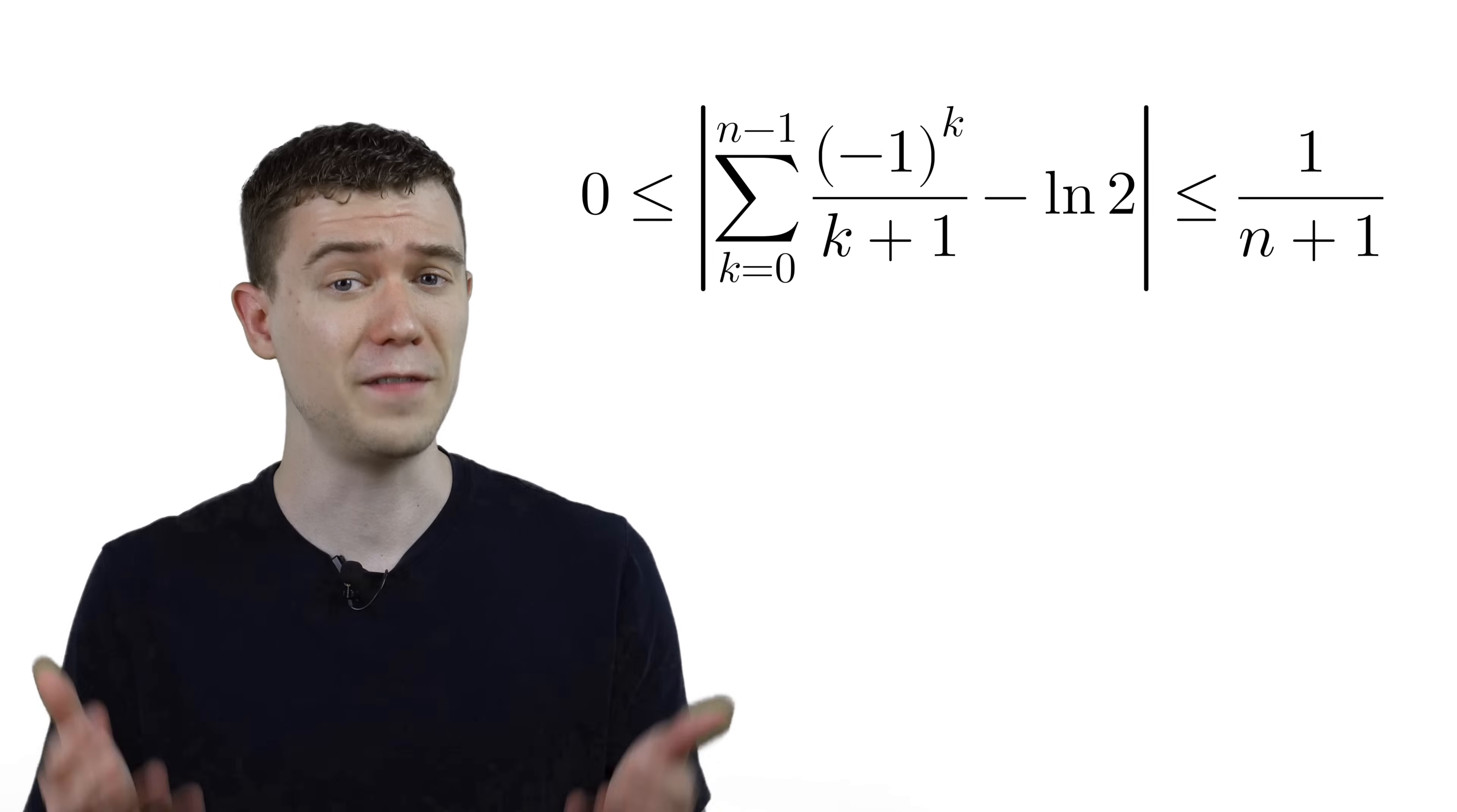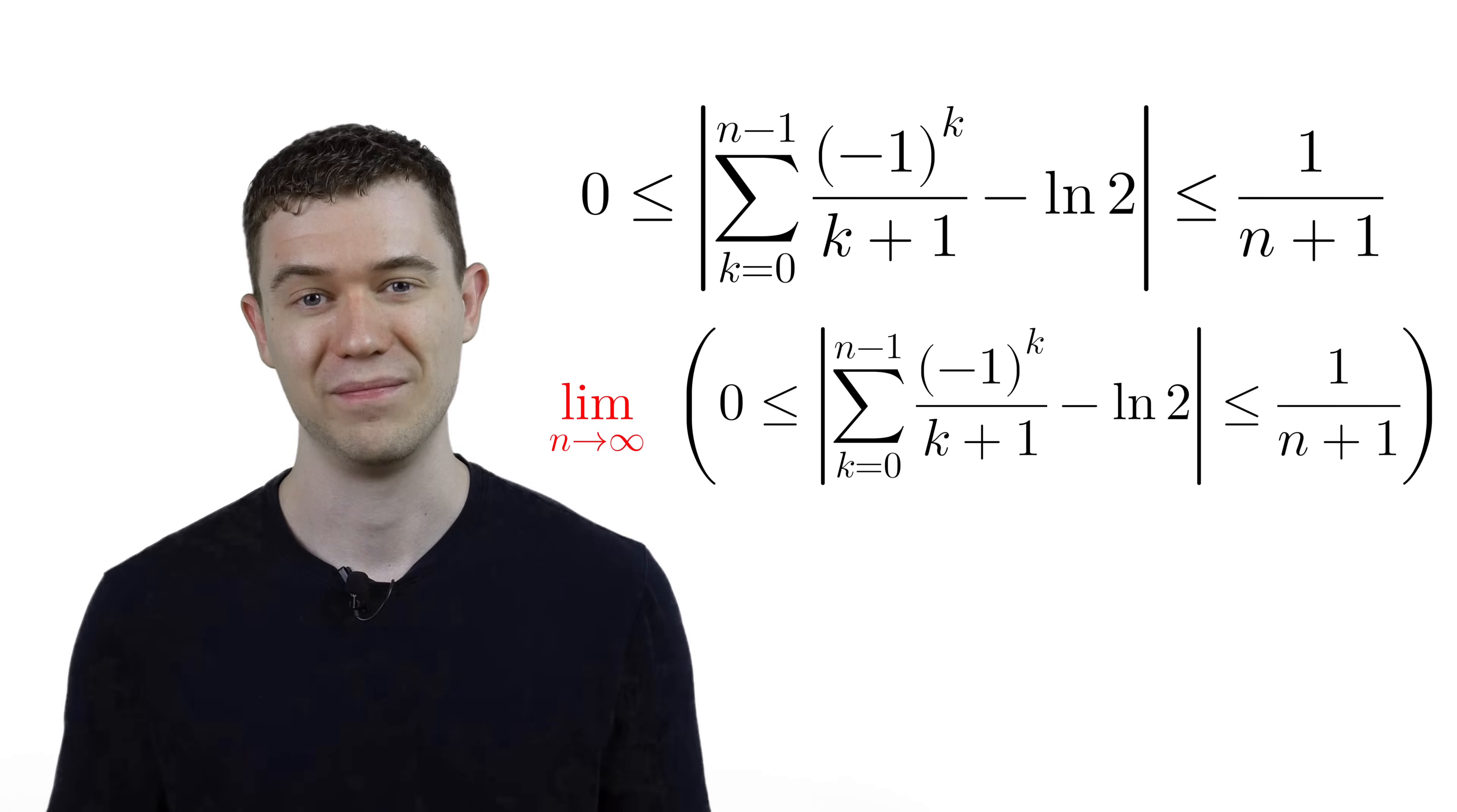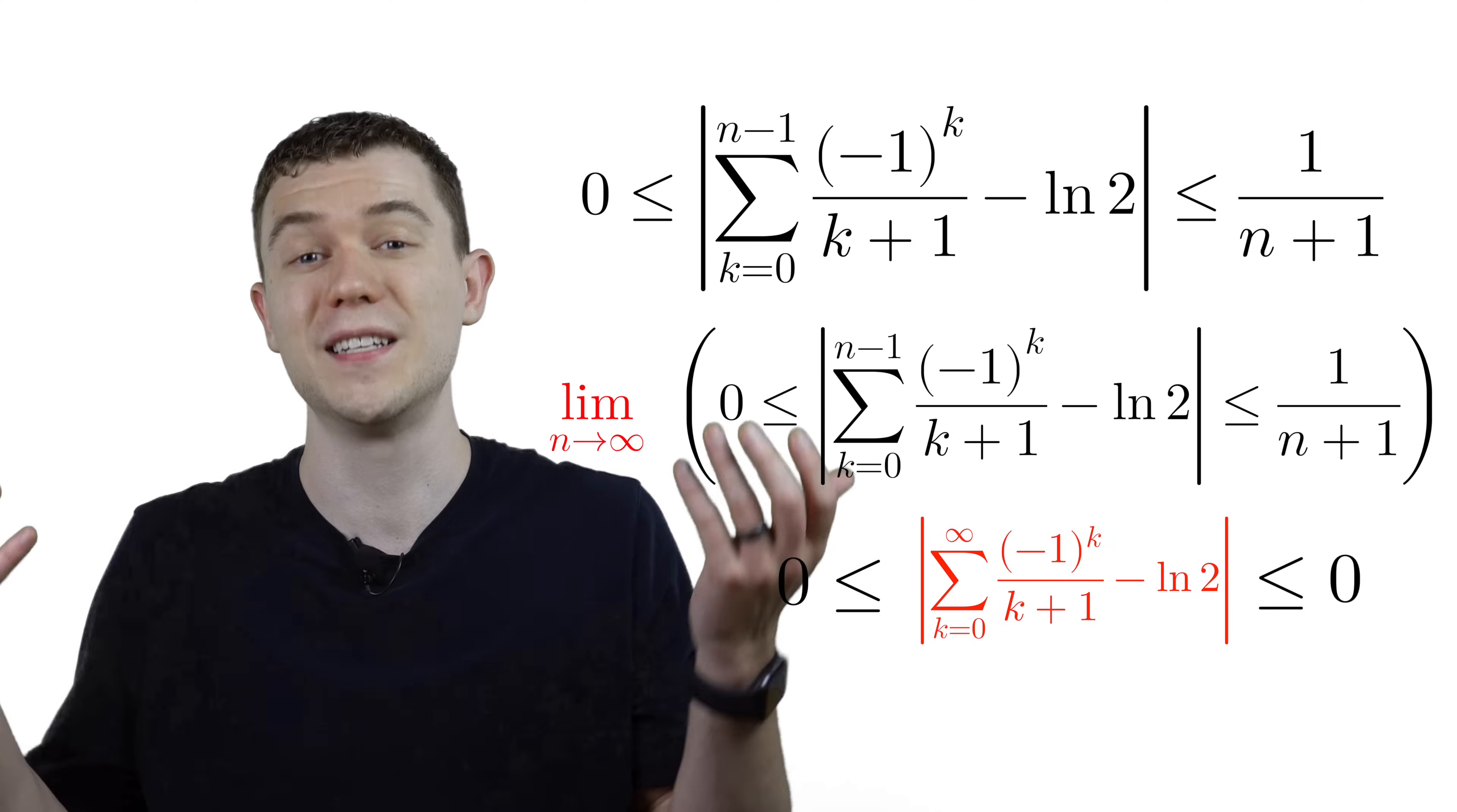Now, this is a finite sum, and we were interested in an infinite sum at the start of this video. So let's create it by taking the limit across this inequality. The limit of 0 is 0. The limit of the index of this sum goes off to infinity, creating the alternating harmonic series, and the limit of 1 over n plus 1, that goes to 0.